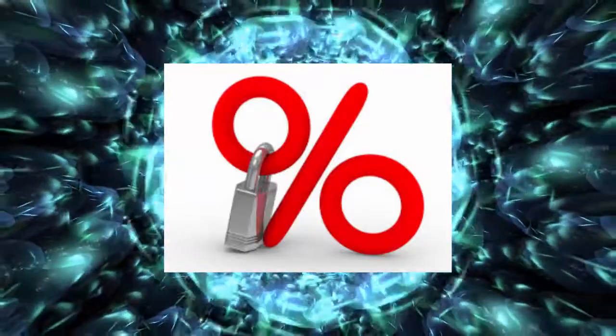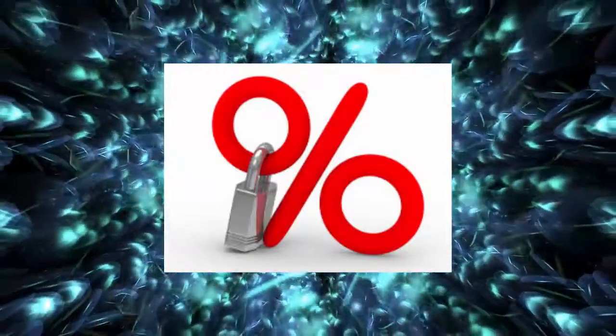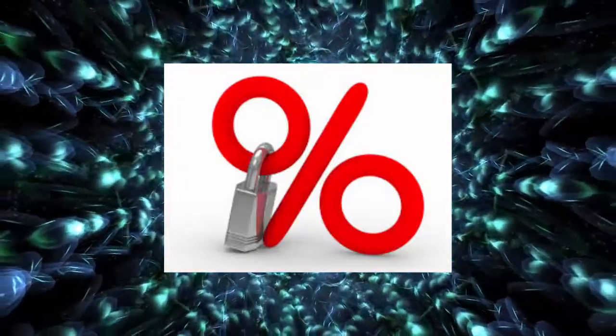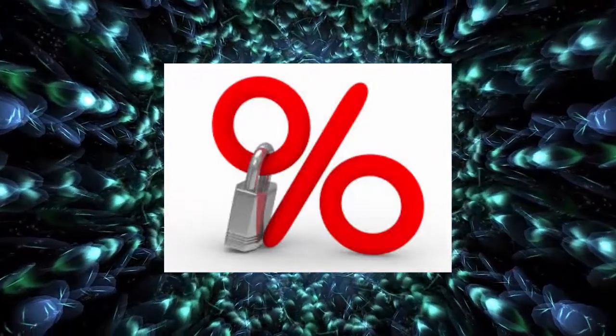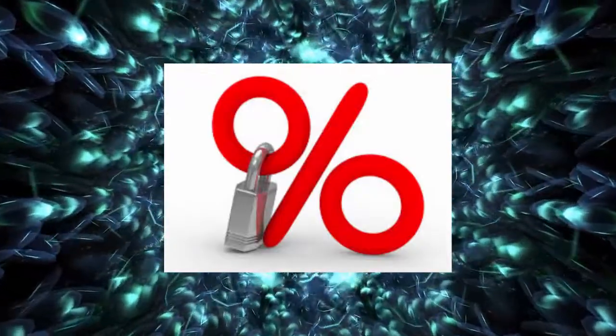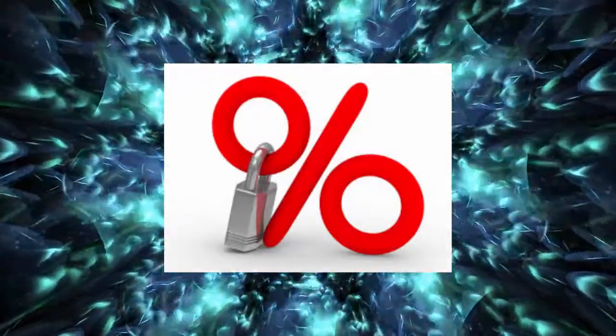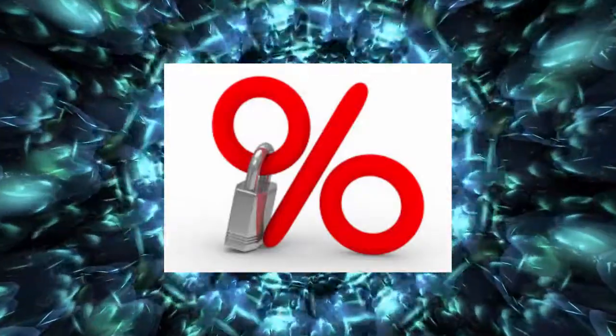For instance, a Tracker Mortgage loan may be 1% above base rate. In the event that the base rate is 0.5%, you'll pay 1.5%. In this way, if the base rate ascends to 2%, you'll pay 2.5%.